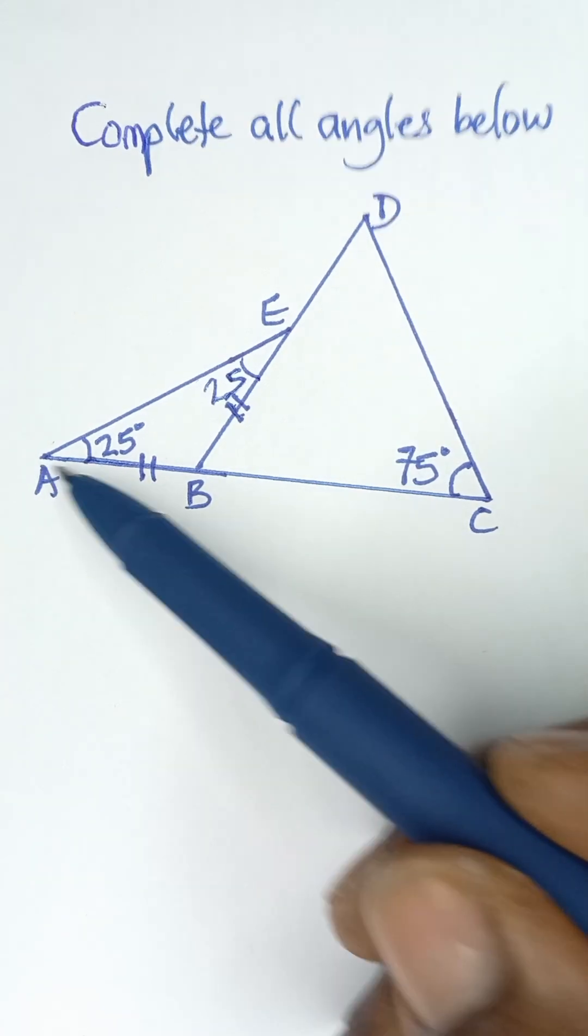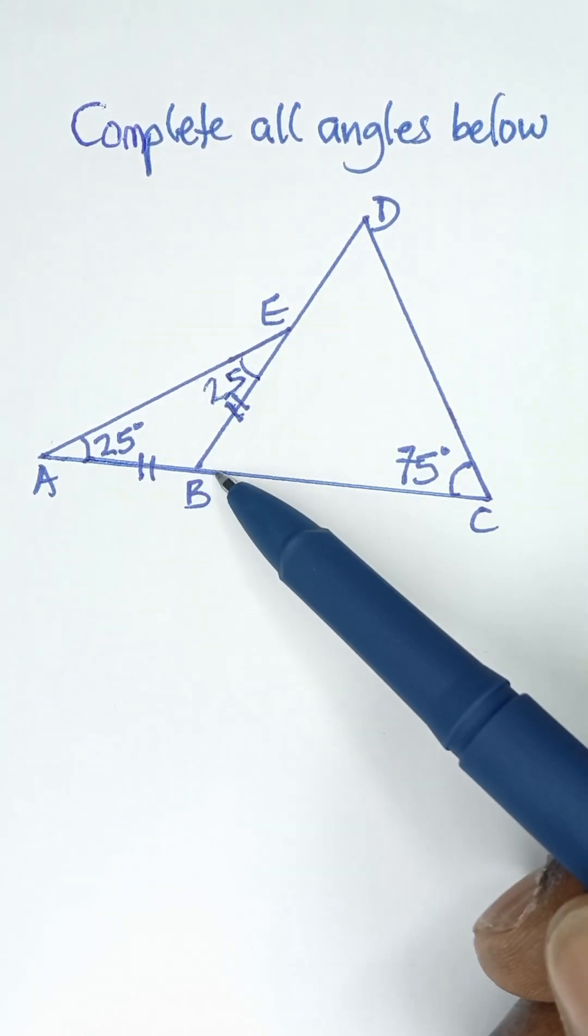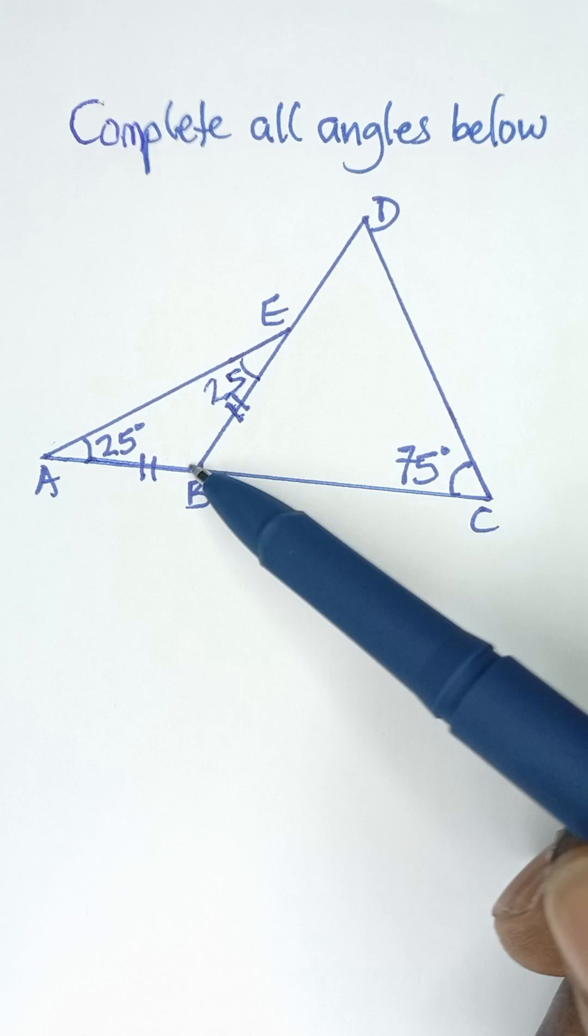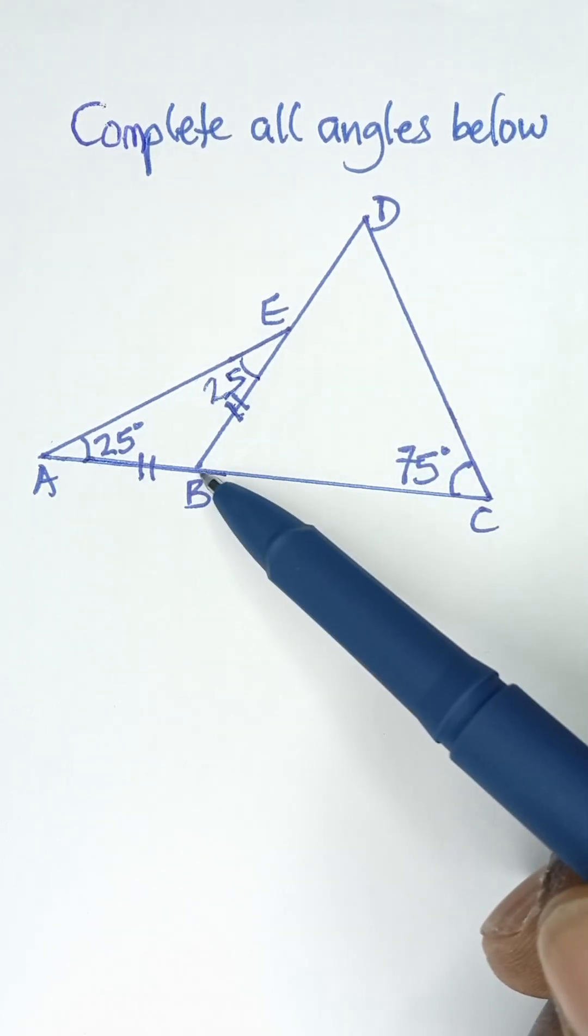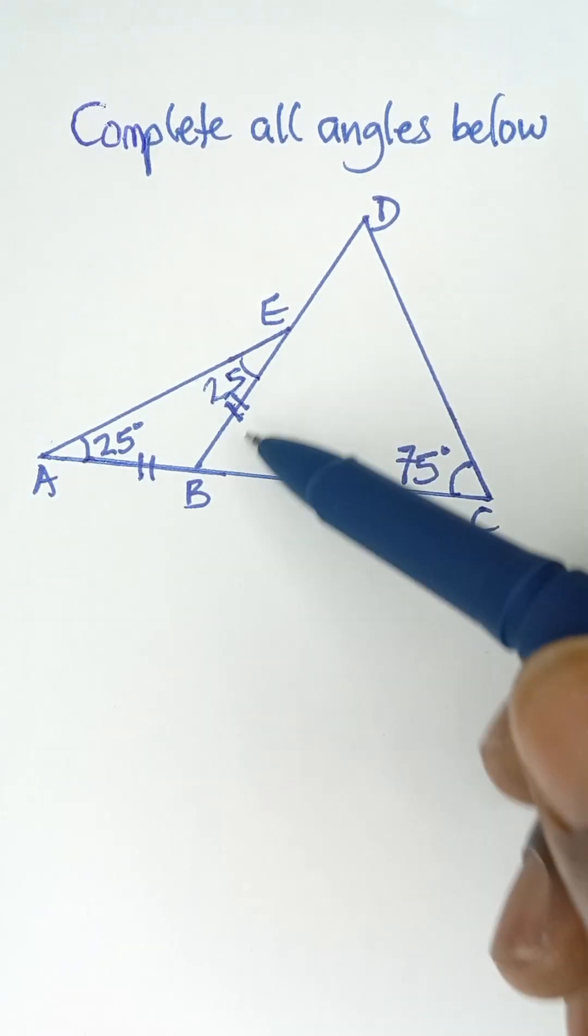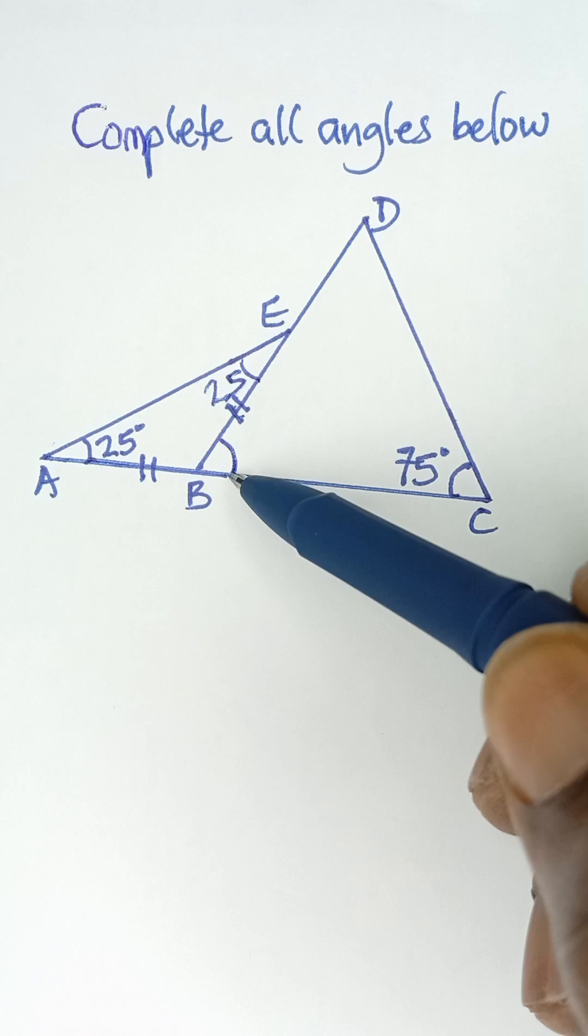Now, if you look at this line AB, it extends outside this triangle ABE. This line AB extends outside to form an exterior angle of the triangle.